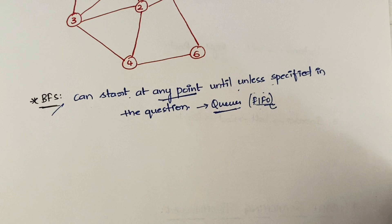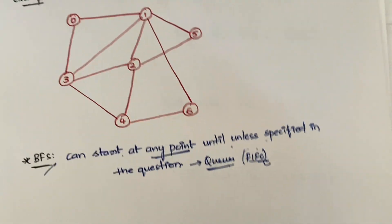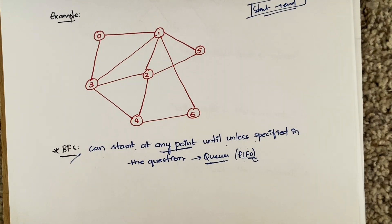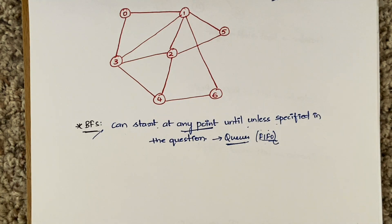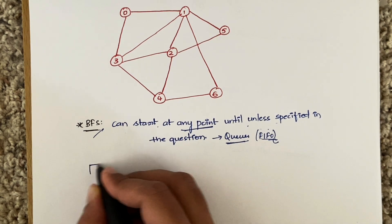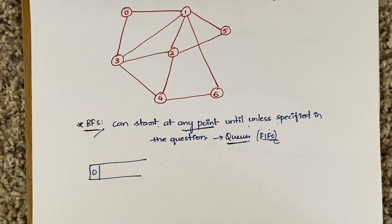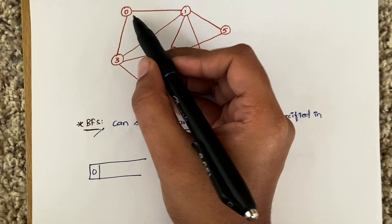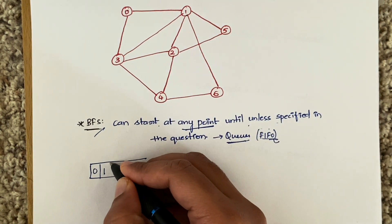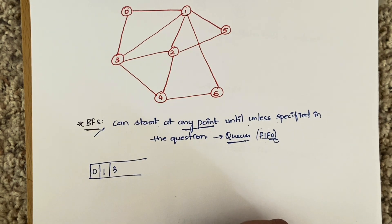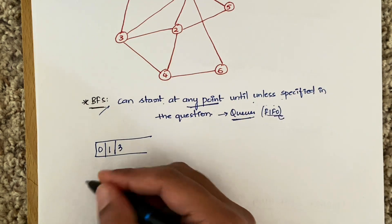Let's look at our example — let me zoom in a bit. We'll consider node zero as our starting node. This is our queue. From zero, what vertices can we reach? From zero we have a path to node one and a path to node three. So we visit one and three. Zero is now done, and we add it to our result.